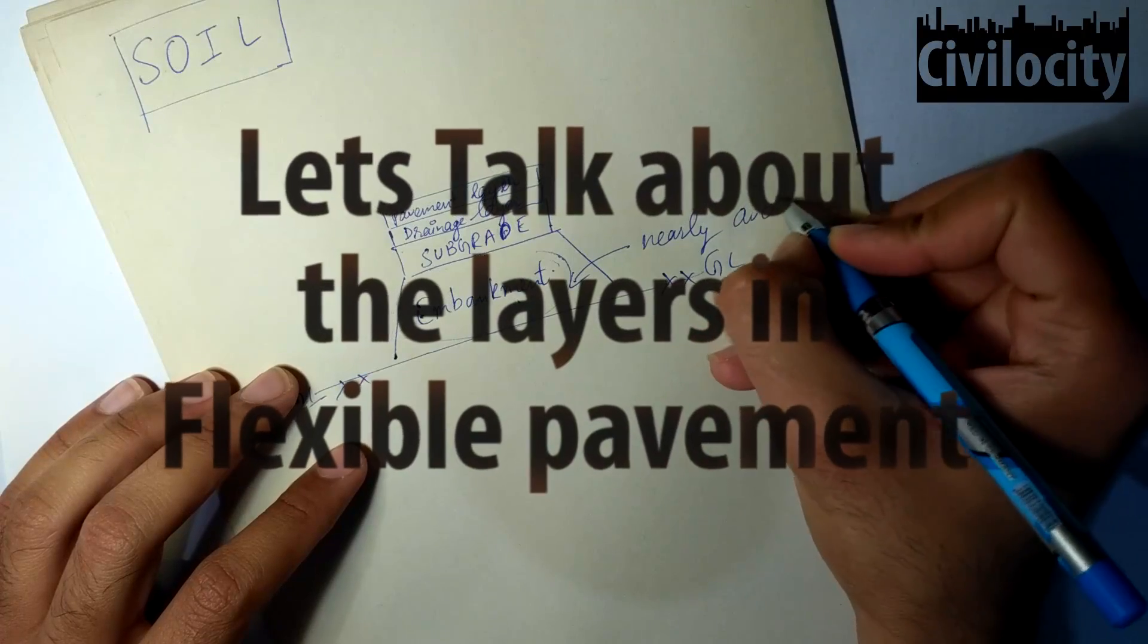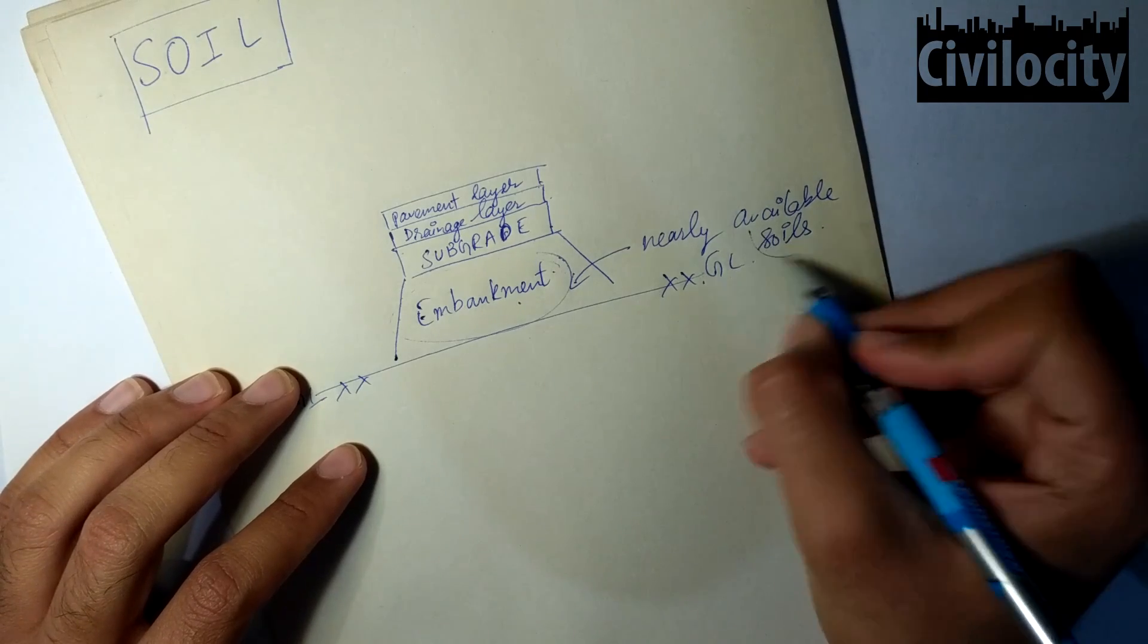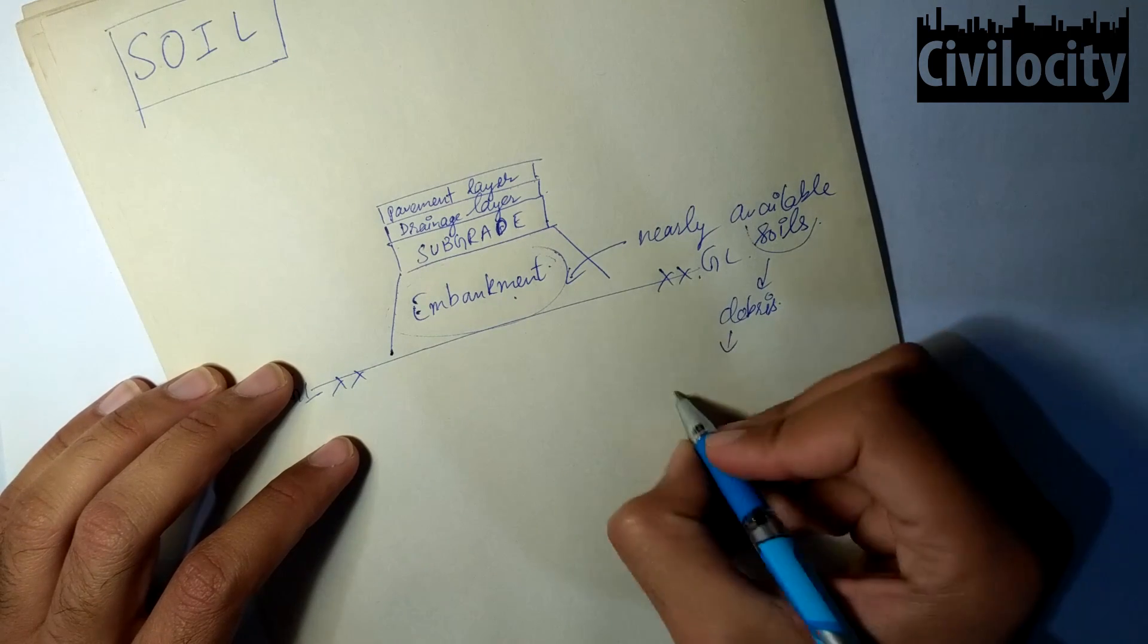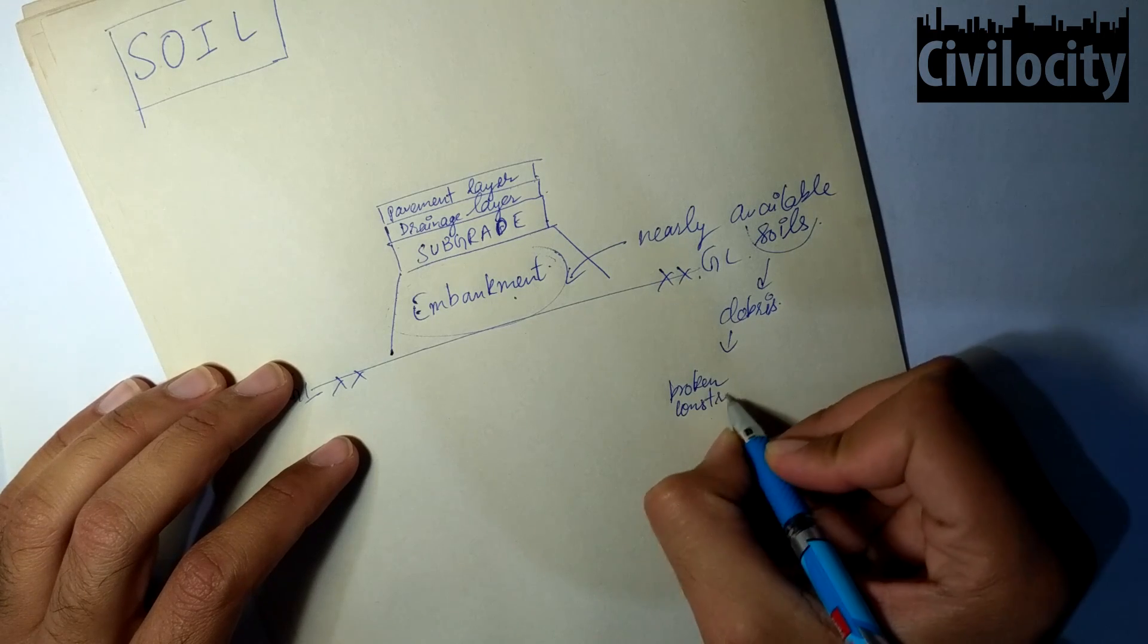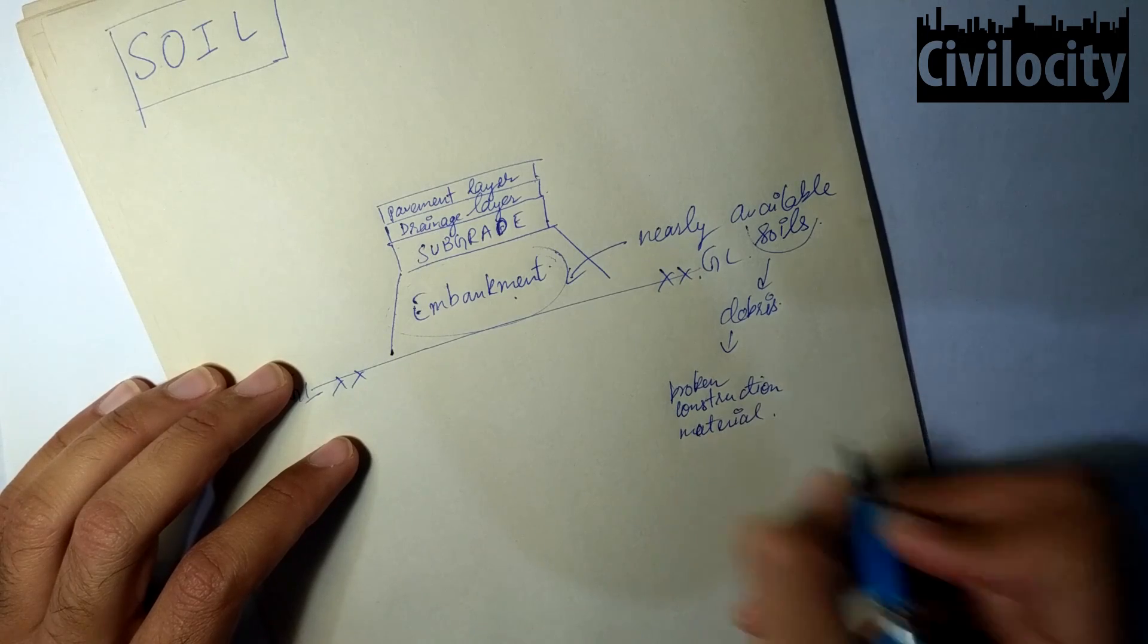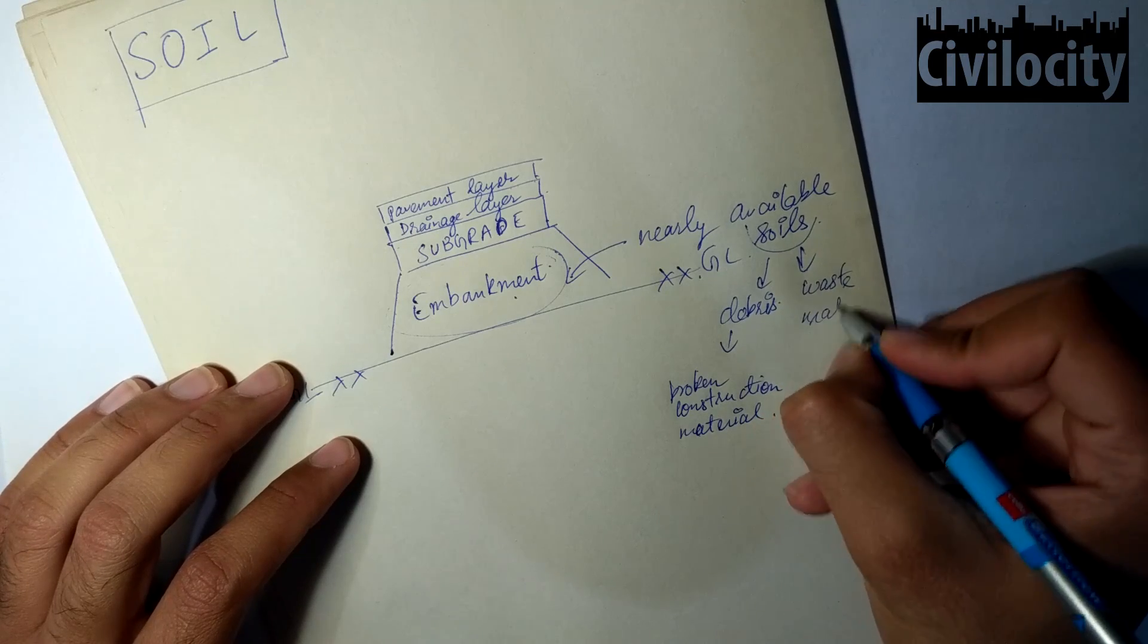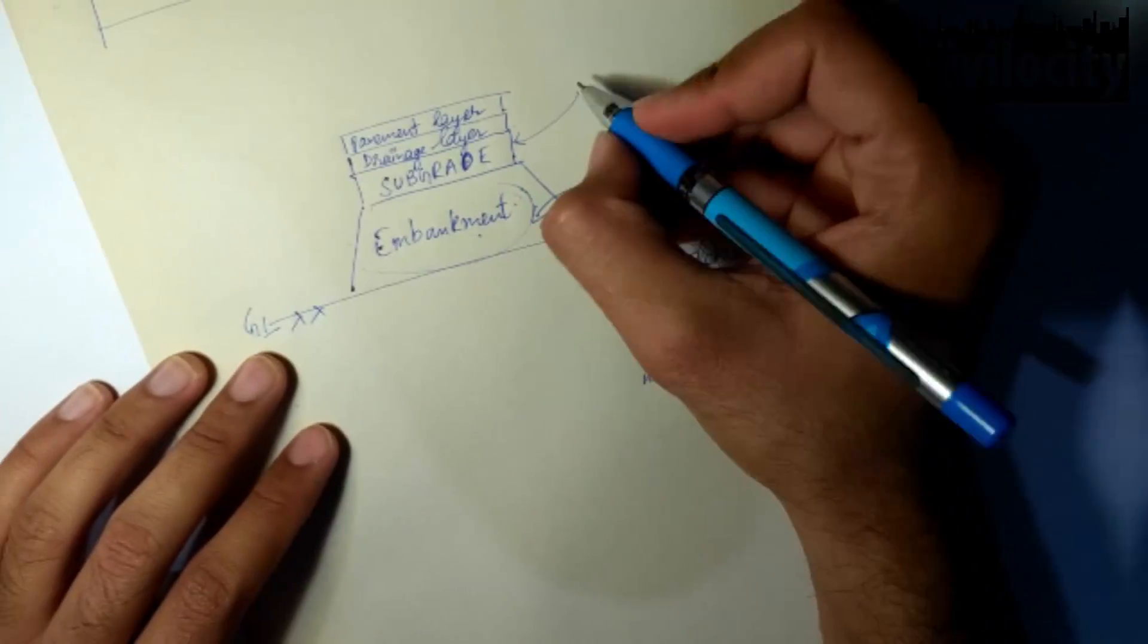Embankment can be made by nearly available soils, and these soils can include debris, which is the waste construction material or broken construction material. This embankment layer is not made up of pure soil and can be made from nearly available soils or from the excavation of constructions. It is not given that importance, and this layer is made and compacted. Above it there is a subgrade layer.